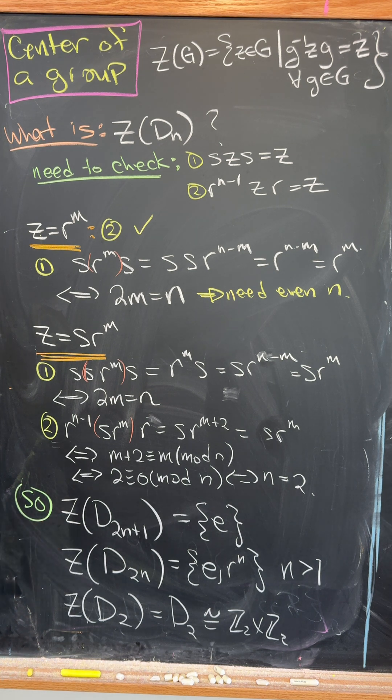But after all of this, we see that the center of D sub two N plus one is trivial. And then the center of D sub two N has two elements, E and R to the N.